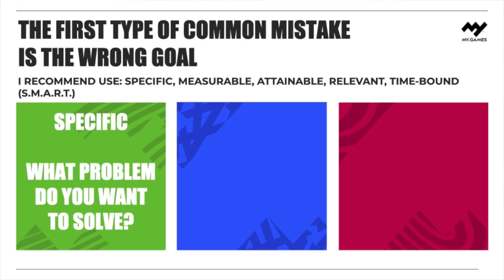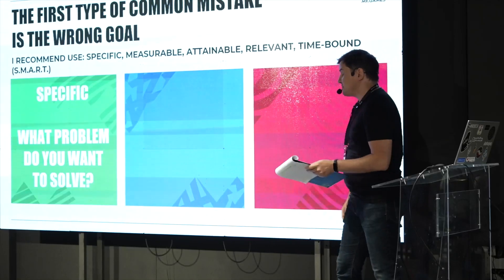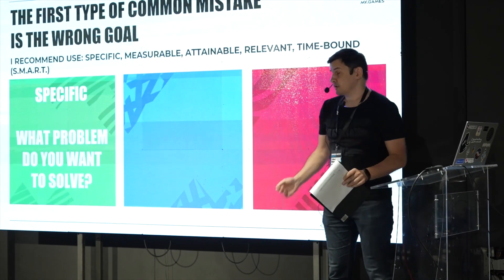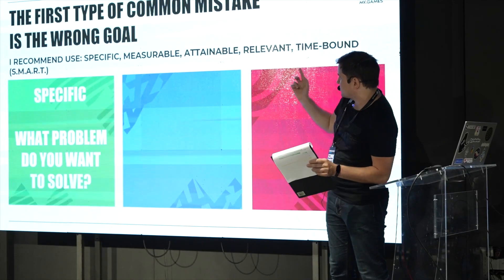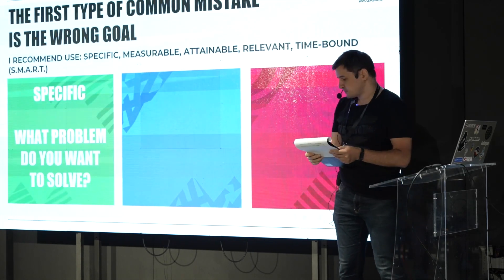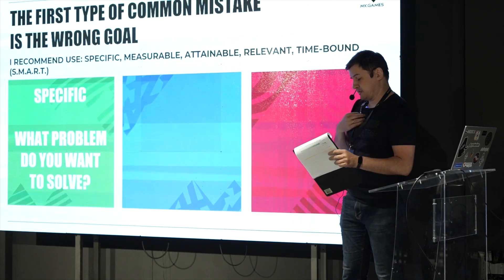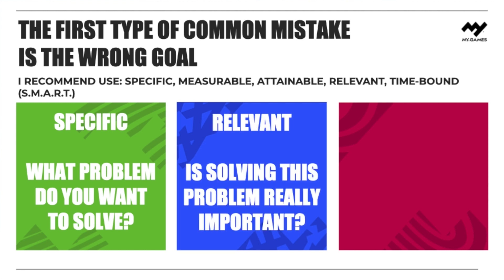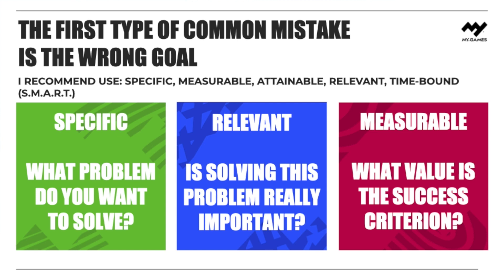The first type of common mistake is a wrong goal. There are many different goal-setting methods — you can use whatever you like. Personally, I use SMART: Specific, Measurable, Attainable, Relevant, and Time-bound. In prototyping, it's critical to at least be specific — what problem do you want to solve? Then relevant — is solving this problem really important, and will it help your product? And finally, measurable — what metrics and values will you use to evaluate success?